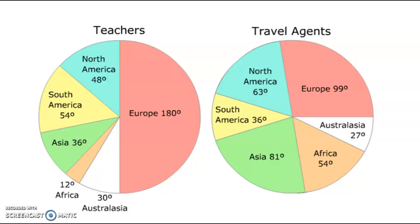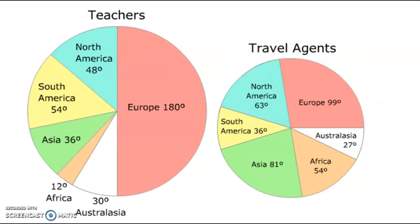As I don't know how many teachers and how many travel agents, I can only answer that a larger proportion of teachers went to Europe. However, if we turn these into comparative pie charts where the travel agents pie chart becomes smaller, I can see that there are less travel agents altogether.